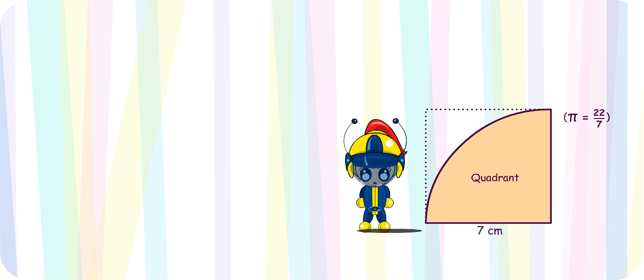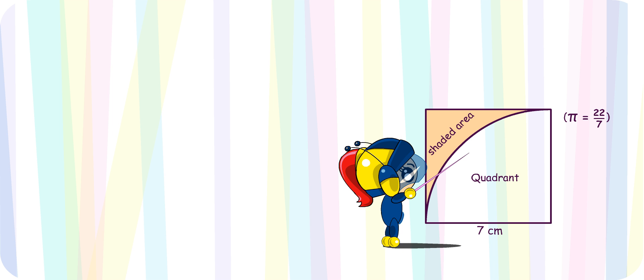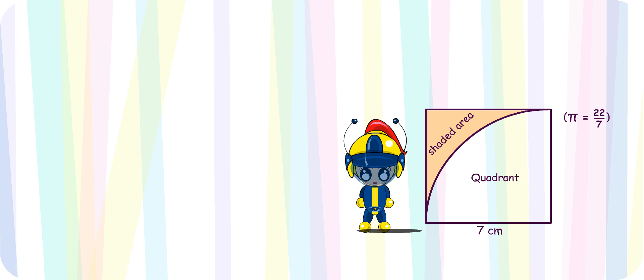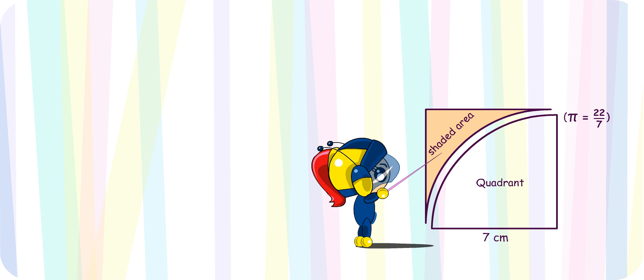There is a square and a quadrant. I know how to solve it. The shaded area is the part of the square not covered by the quadrant. So, I have to take away the area of the quadrant from the area of the square to find the shaded area.